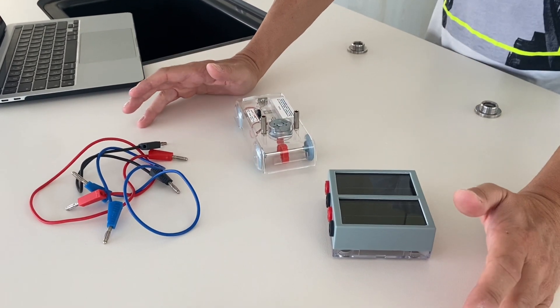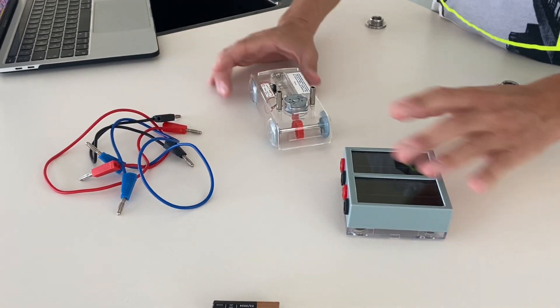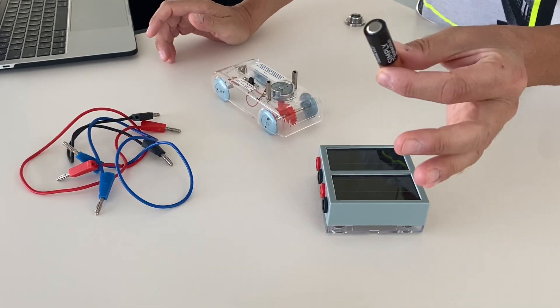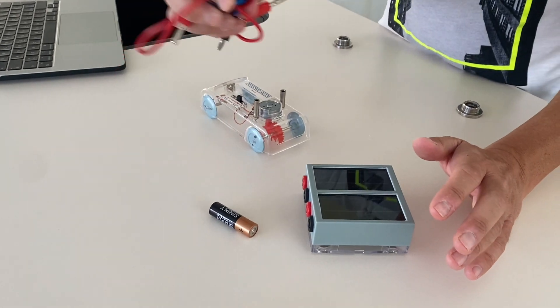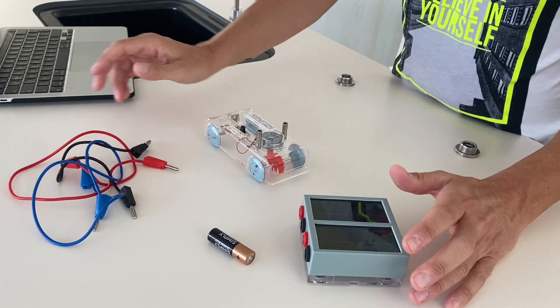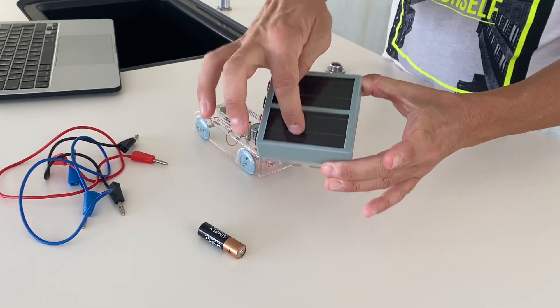So, let's see the things we're going to use: a toy car, a battery, three cables to create an electric circuit, and two photovoltaic panels.